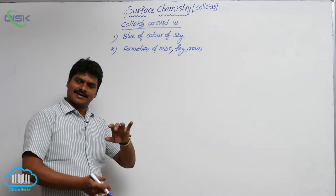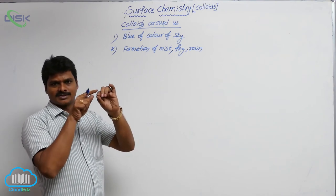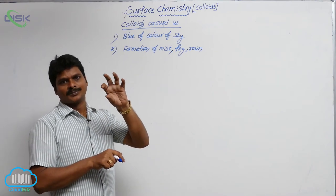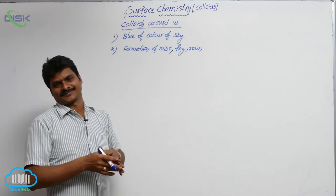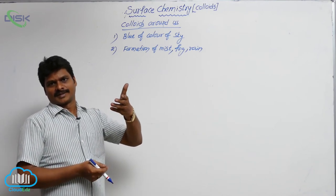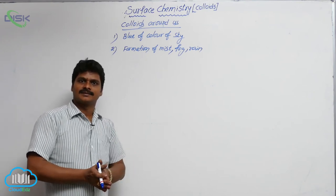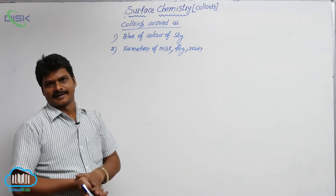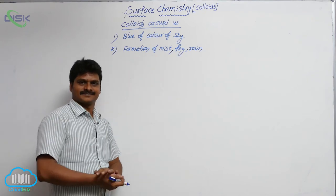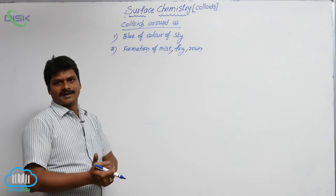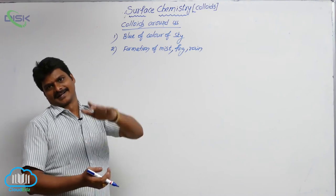When the temperature decreases below the dew point, the moisture in the air gets condensed on the finer dust particles. Because of this aggregation of moisture, the size of the dust particles increases. These particles, being in the colloidal range, continue to float in the air. The air containing these particles is called mist or fog. Mist or fog is due to the formation of colloidal-range particles by condensation of moisture on dust particles.